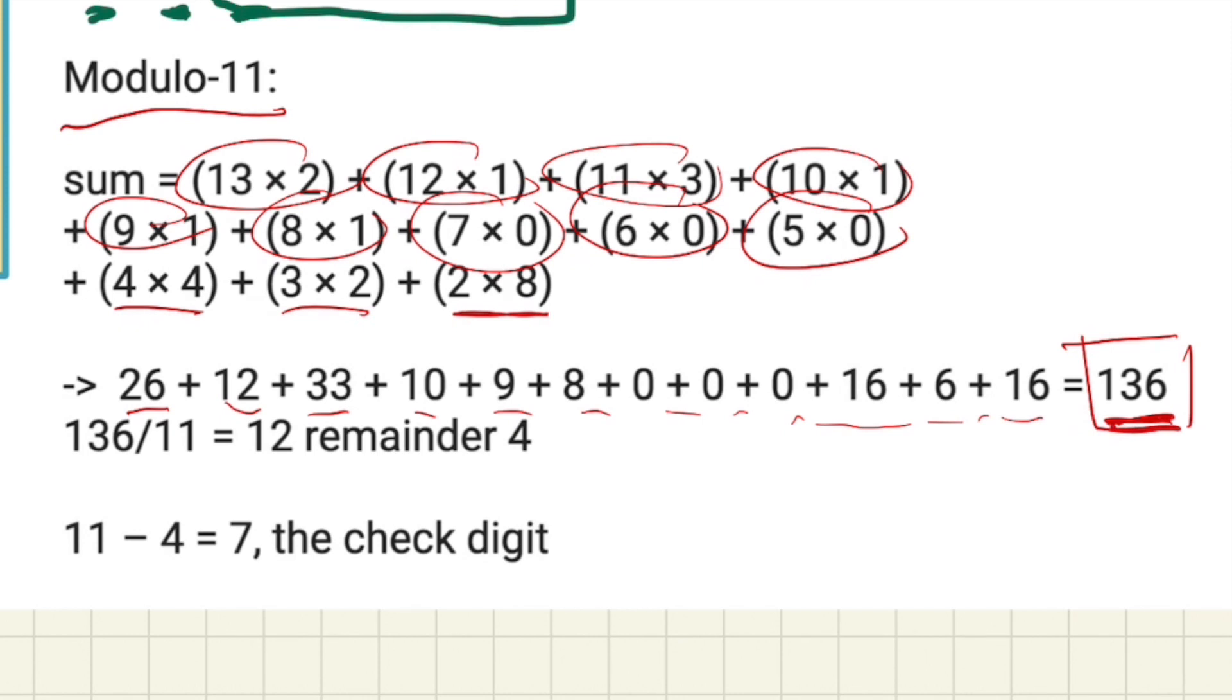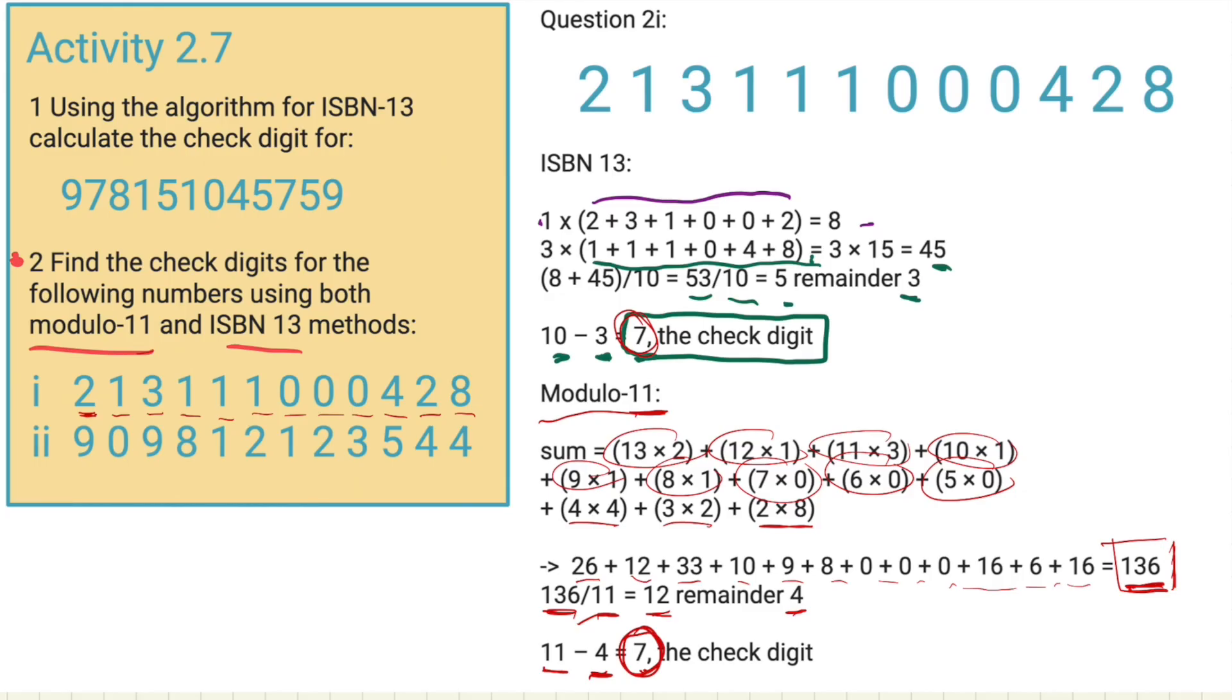Now, with modulo-11, we're going to take that 11, and we're going to divide our total, 136, by 11. Again, it works on remainders, so this equals 12, remainder 4. So we're going to take our original value, 11, we're going to subtract the remainder, and our check digit is going to be 7. So, the ISBN number for this one, ISBN-13, has got the same check digit as the modulo-11, which both equals 7.